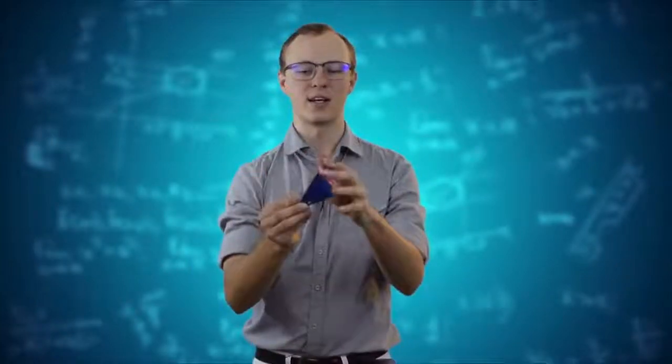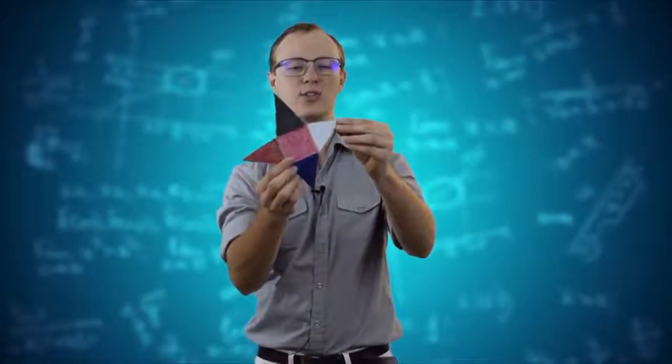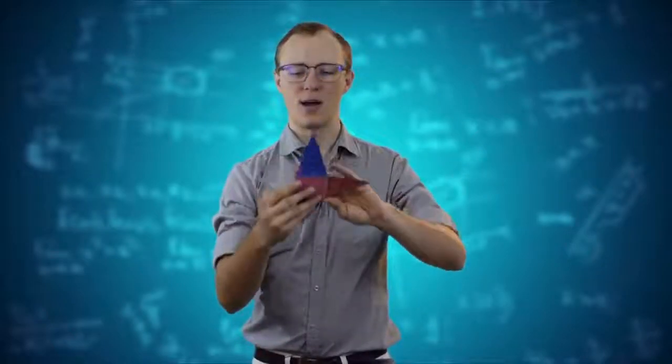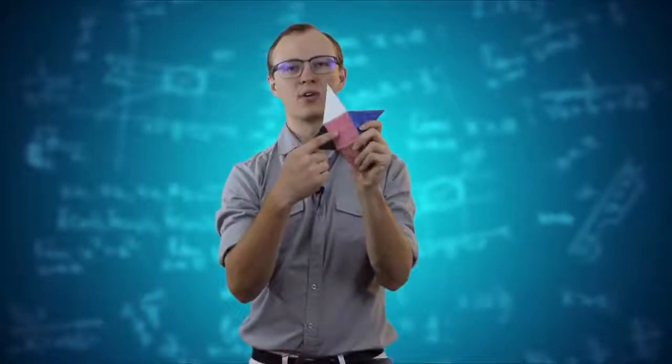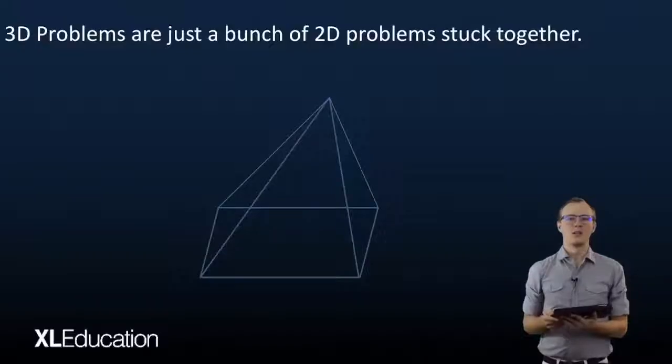So this pyramid that we have here can easily be broken up into one triangle, two triangles, three triangles, four triangles, and a square. And we know how to work with triangles and we know how to work with squares. So it's really easy for us to work with pyramids. Let's see what that looks like in a diagram.